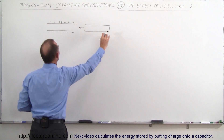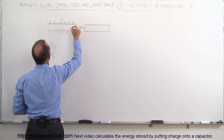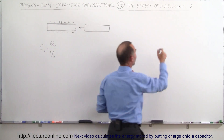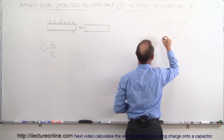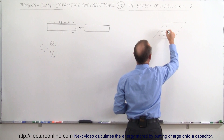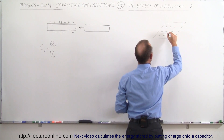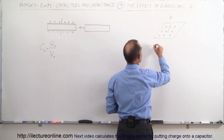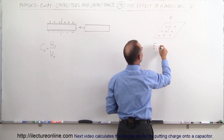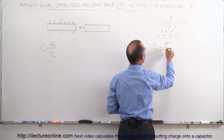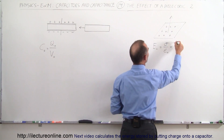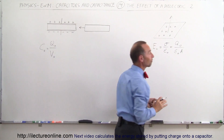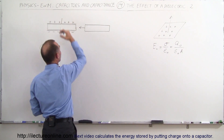Now we take the dielectric and place it inside the capacitor. If we have a capacitor plate with a certain amount of charge on it, the electric field perpendicular away from the surface of an infinite plate — E₀, the initial electric field — is going to be equal to the charge density divided by ε₀, and the charge density equals the initial charge on the plate divided by the area.